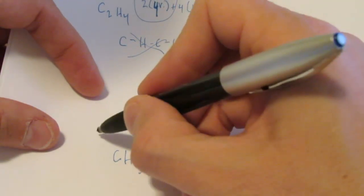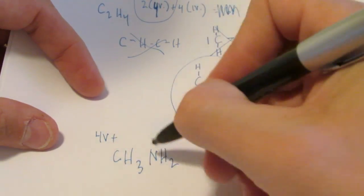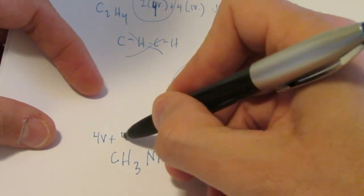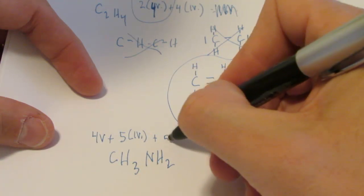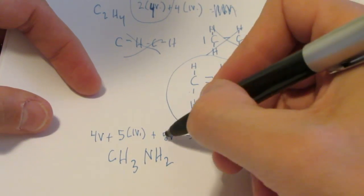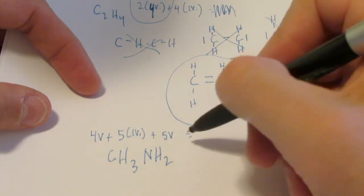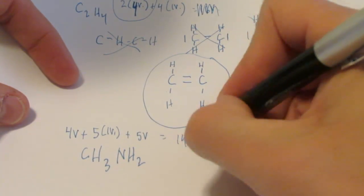CH3NH2. Let's see, we've got a carbon, four valence. We've got a total of five hydrogens, one valence a piece. And we've got our nitrogen, group fifteen, five valence. We have five plus five is ten. We've got fourteen valence to work with here.